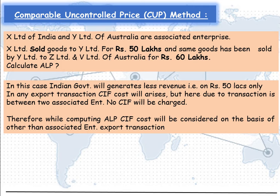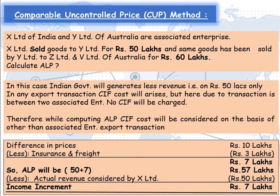Because this transaction is between two associated enterprises, no CIF cost was incurred. CIF means cost of insurance and freight. Therefore, while computing the arms length price, the CIF cost will be considered on the basis of other unrelated party export transactions. The difference price is Rs 10 lakhs (60 lakhs minus 50 lakhs). Insurance and freight cost, taken on assumption, is Rs 3 lakhs, so the net amount becomes Rs 7 lakhs. Therefore, the arms length price will be 50 lakhs plus 7 lakhs, which is Rs 57 lakhs.